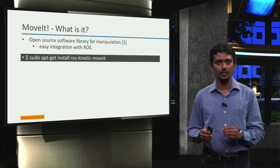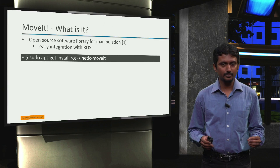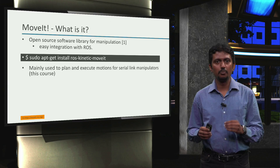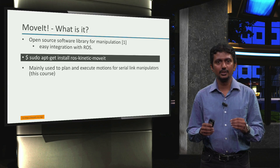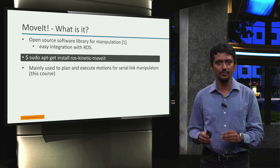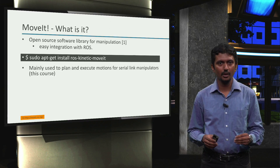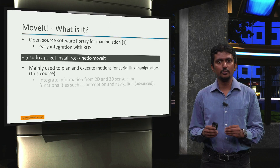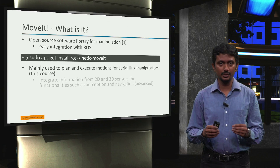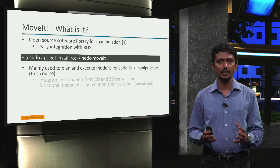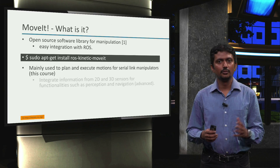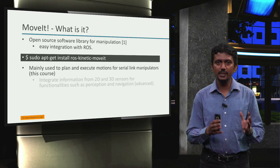The developers and maintainers of MoveIt ensure that there is a binary installation of MoveIt available for each ROS installation — MoveIt can be installed via this command. In this course, we will mainly use MoveIt to plan motions for the fixed serial link manipulators, the UR10 and the UR5 robots in our factory. MoveIt can also be used to integrate information from 2D and 3D sensors to achieve additional functionality such as perception and navigation. However, we will not be exploring those options in this basic course.